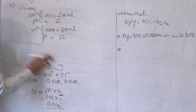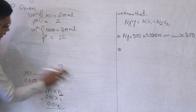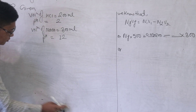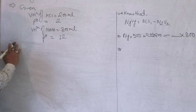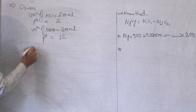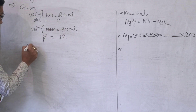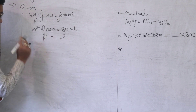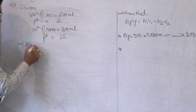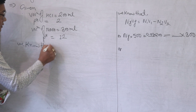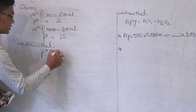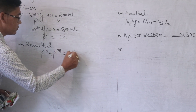NaOH has a strength. NaOH has a normality. NaOH can be expressed in terms of normality, and from that we can find pH. We know that pH plus pOH is equal to 14.